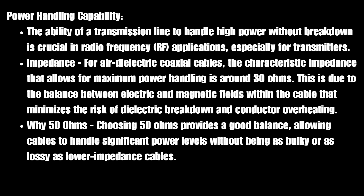The first factor was power handling capability. The ability of a transmission line to handle high power without breakdown is crucial in radio frequency applications, especially for transmitters. For air dielectric coaxial cables, the characteristic impedance that allows for maximum power handling is around 30 ohms. This is due to the balance between the electric and magnetic fields within the cable that minimizes the risk of dielectric breakdown and conductor overheating. So if the number is 30, why did we settle on 50? Choosing 50 ohms provides a good balance, allowing cables to handle significant power levels without being as bulky or lossy as lower impedance cables.